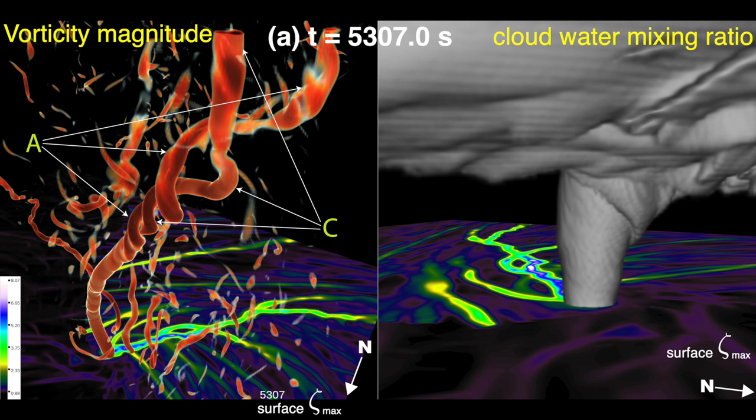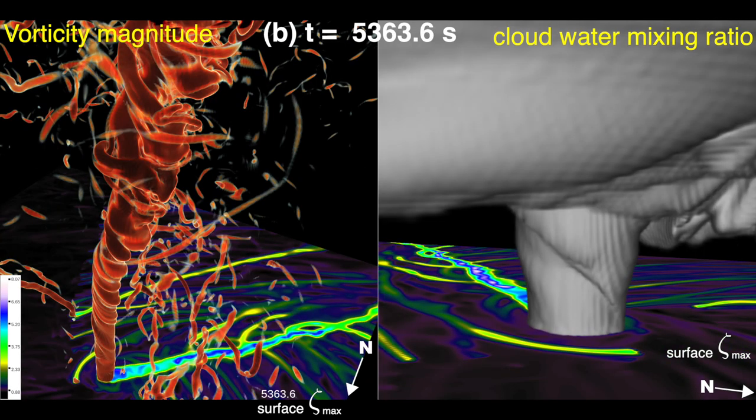I don't know what it means, but it's pretty cool — that's a lot of my work, by the way. At this point in the simulation, we have a fully formed EF-5 tornado.